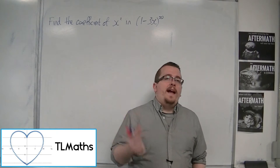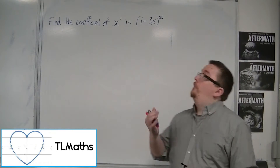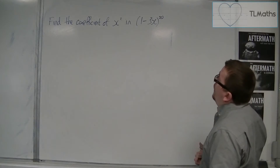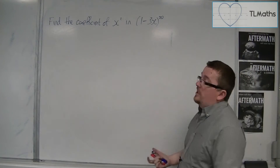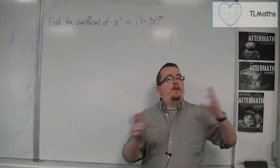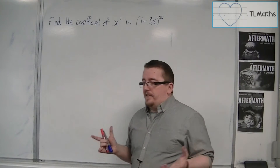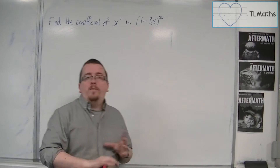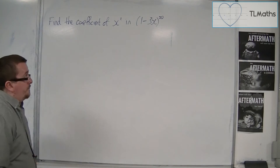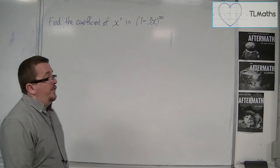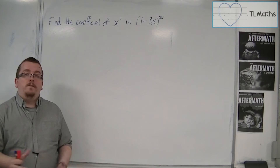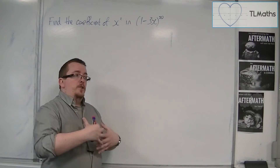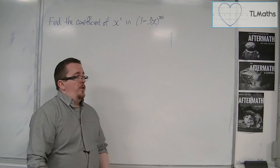Can we find the coefficient of x squared in (1 minus 3x) to the power of 20 without fully expanding it and without using a calculator or Pascal's triangle? This is the challenge that we have at this point.